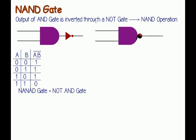Here, the output is only low or 0 when and only when all inputs of the gate are 1, and in all other cases, the output of the NAND gate is high or 1. Like the AND gate, a NAND gate can also have more than 2 inputs, such as 3 or 4 input NAND gates.